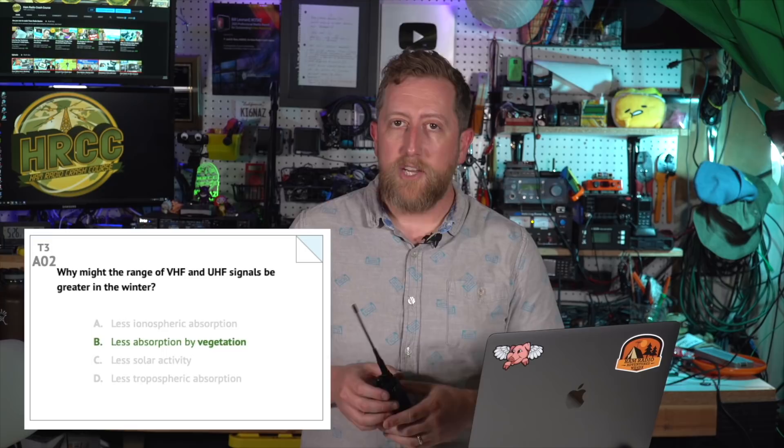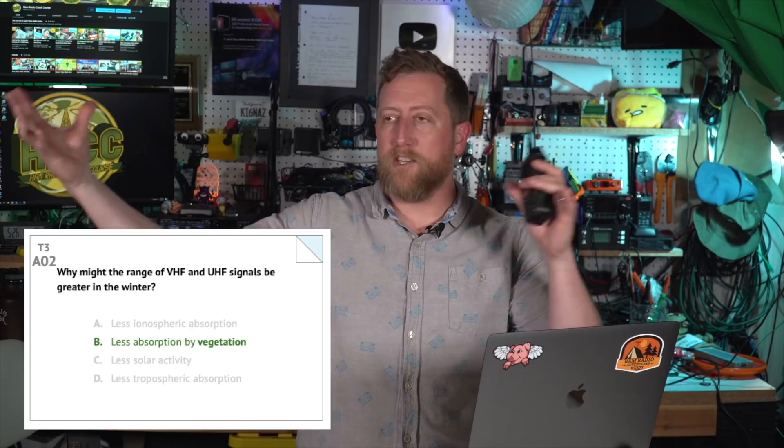T3A02: Why might the range of VHF and UHF signals be greater in the winter? VHF and UHF are line-of-sight radio — repeaters, handhelds, two-way communication. The answer is B — less absorption by vegetation, specifically leaves. In springtime with lush foliage, organic materials actually absorb RF. So if you get better range in winter versus summer, it could be due to vegetation.